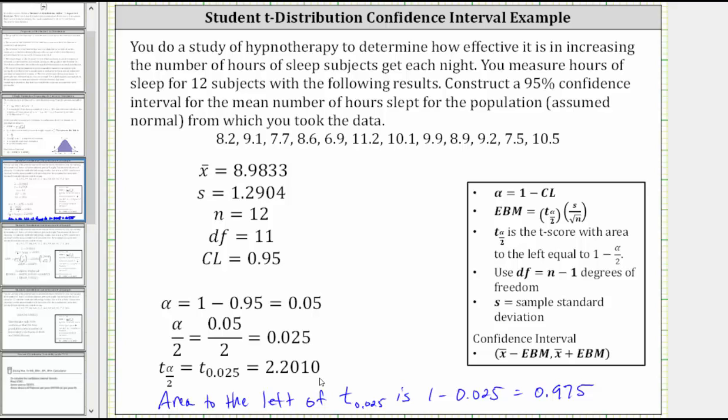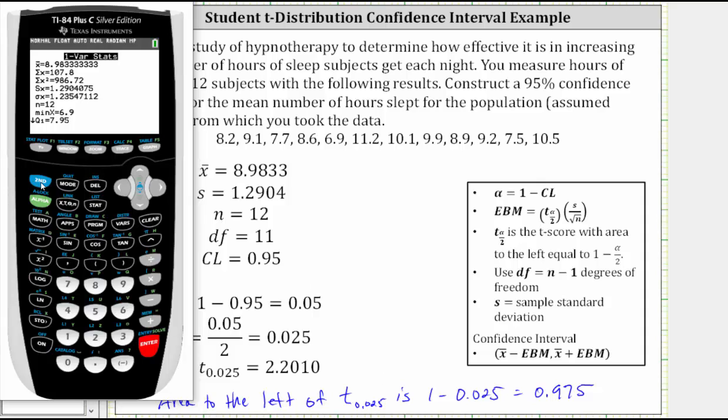Now we'll show how to find this t-score on the TI-84 as well as using Desmos.com. On the TI-84, press second, vars for the distribution menu. Next we select option four for inverse t. Area means area to the left, which we now know is 0.975. Degrees of freedom is 11. And you can see we have, to four decimal places, 2.2010. Notice how we have a nine in the fourth decimal place; rounding up, we have 2.2010.